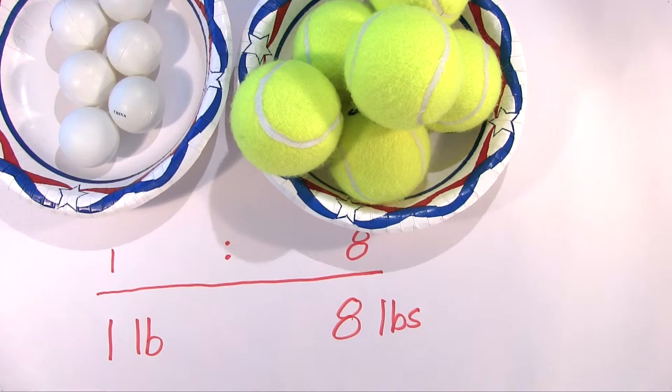So the big takeaway here is that if I have the same number of ping-pong balls as I do tennis balls, the ratio of their masses would always be 1 to 8. And conversely, what I can say is that if I have one pound of ping-pong balls and I have eight pounds of tennis balls, there would be the same number of balls in each pile.